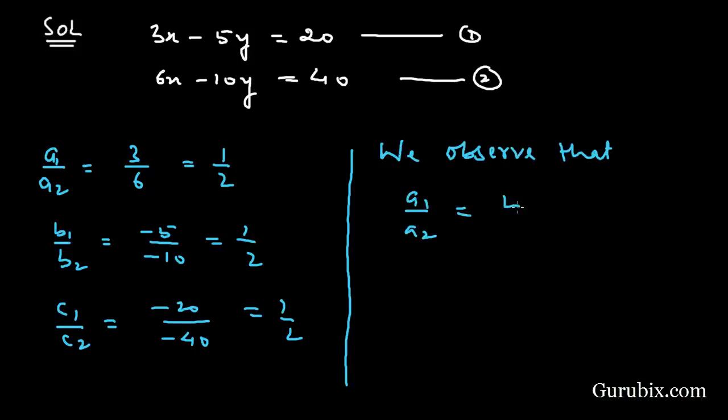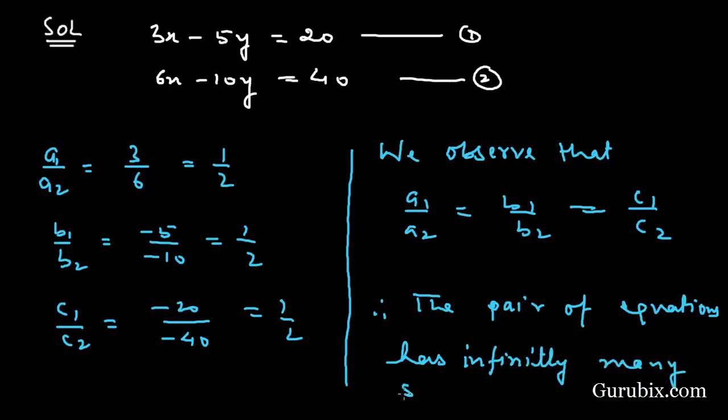Here we observe that a1 over a2 is equals to b1 over b2 is equals to c1 over c2. Therefore, the pair of equations has infinitely many solutions. So this is the solution of the question. Thank you.